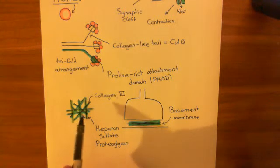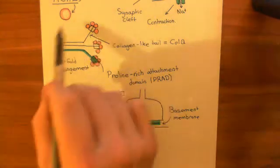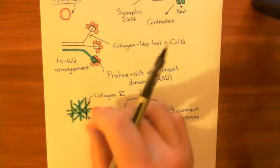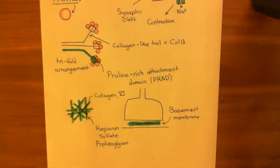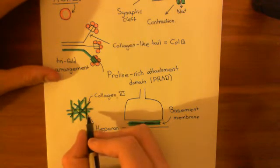Now, it is to the heparan sulfate proteoglycans which these acetylcholinesterase complexes are going to bind. So you're going to have these things bound to heparan sulfate proteoglycan fibers within the basement membrane of the synaptic cleft or the neuromuscular junction, strictly speaking.